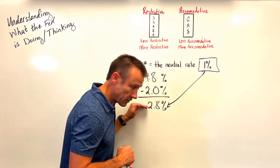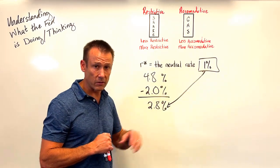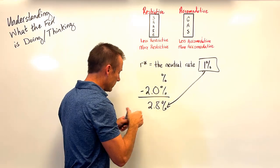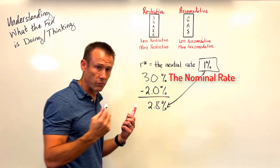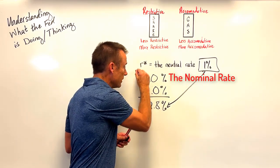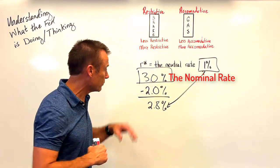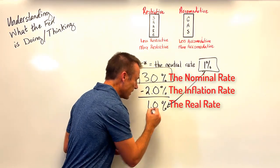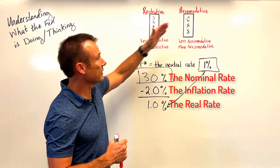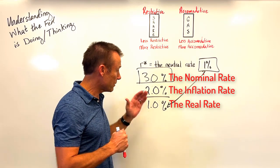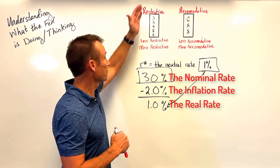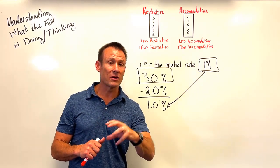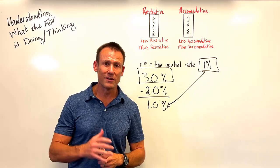Once they get the federal funds rate in real terms down to neutral, what do they need to do? Get the nominal federal funds rate to 3%. That's why you hear in nominal terms people think the federal funds rate might be going to 3% once they get there — because at that point, with inflation at 2%, the real rate equals 1% (the neutral rate), their foot is not on either pedal. They're at neutral — not being restrictive, not being accommodative. I hope that brings nuance and understanding to what the Fed is doing.